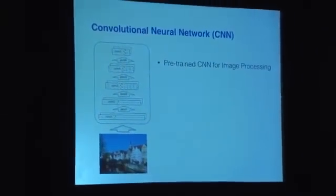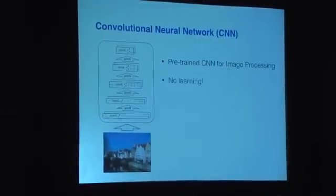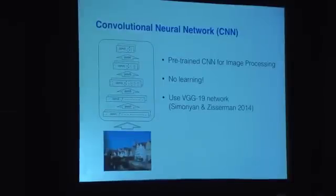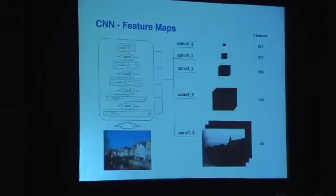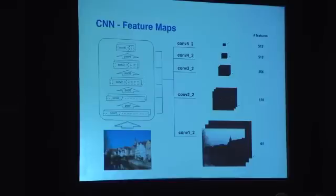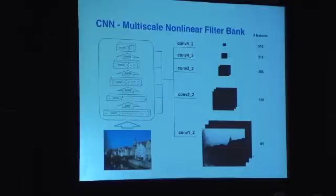In our work, we use a pre-trained convolutional neural network for image processing — there's actually no learning involved. In particular, we use the convolutional part of the 19-layer VGG network. When we show an image to a conv net, the information about that image is represented in the different layers of the network in terms of feature maps. For the purpose of this talk, you can think of a CNN just as a multi-scale nonlinear filter bank.